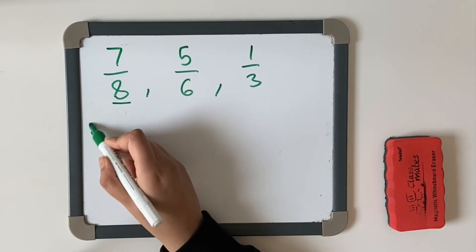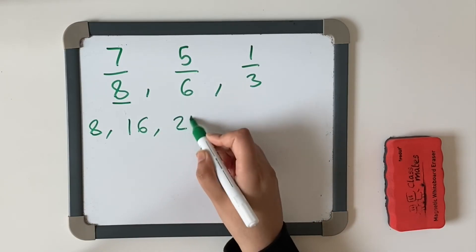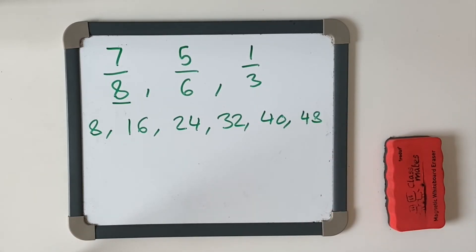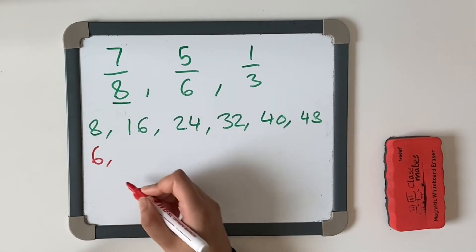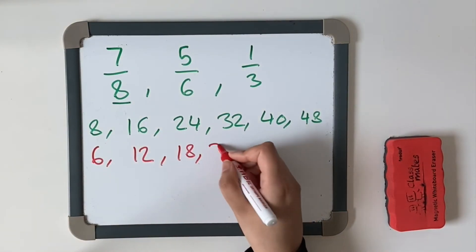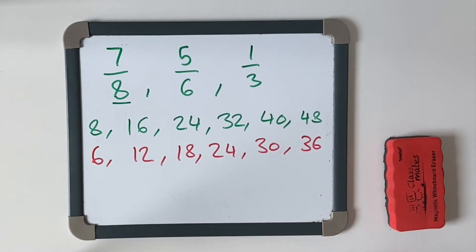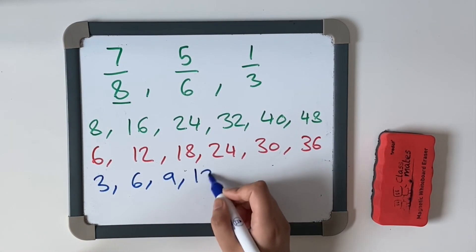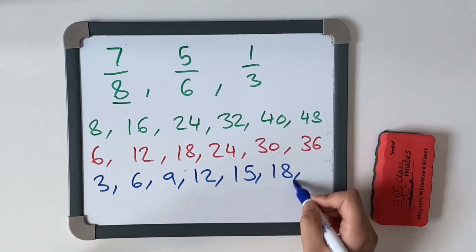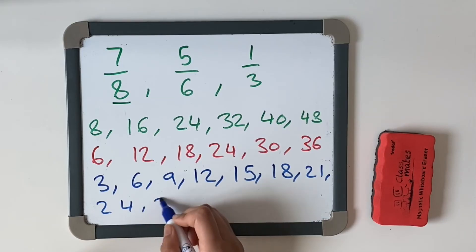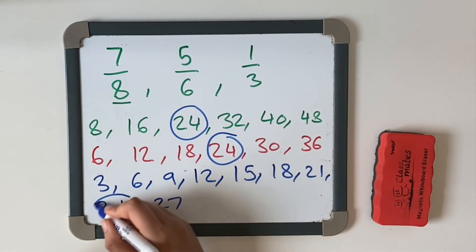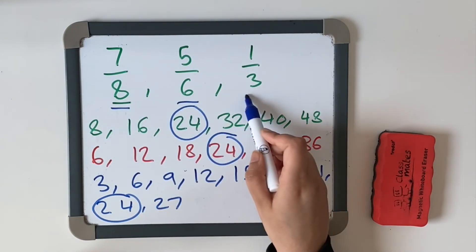We are going to convert our denominators by using our multiples. Let's start off with eight. We've got eight, 16, 24, 32, 40, and 48. Now we're going to use our multiples of six: six, 12, 18, 24, 30, 36. And for our final one, we have multiples of three: three, 6, 9, 12, 15, 18, 21, 24, 27. Now I can see in each row, there is 24. And I'm going to use 24 for our common denominator, because eight, six, and three goes into 24.